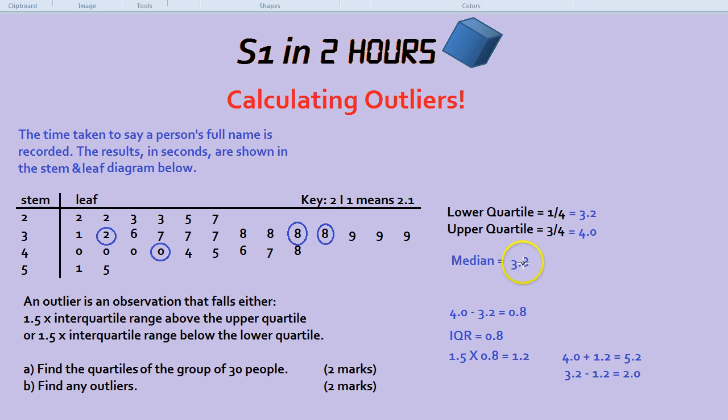Now we're ready for part 2. Find any outliers. Now in the question they will always define what an outlier is and if they don't you can just assume an outlier is any number which is more than 1.5 times the interquartile range above the upper quartile or 1.5 times the interquartile range below the lower quartile. So above the upper or below the lower.